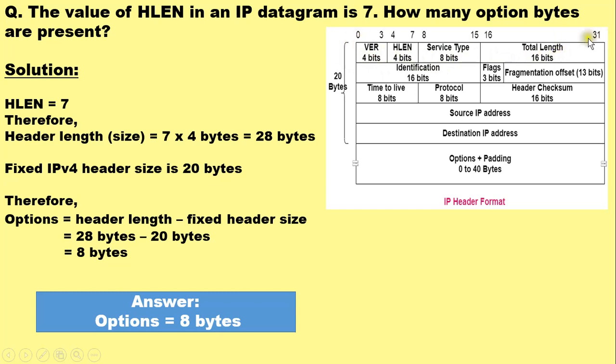32 bits, 0 to 31, means 4 bytes. Now here we are given the HLEN value as 7 and we are supposed to determine the options present in this IPv4 header.